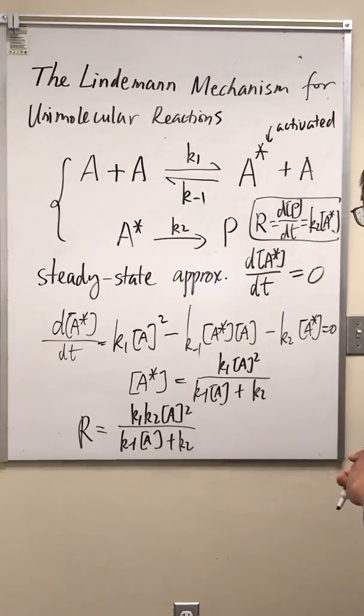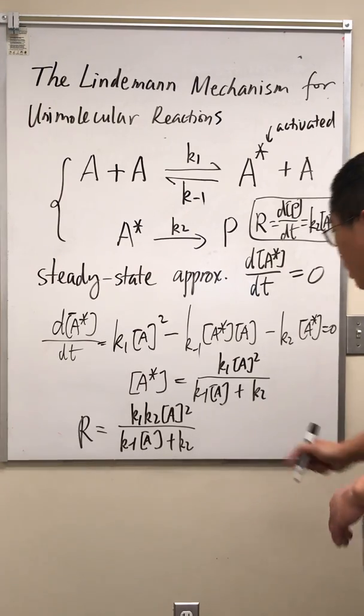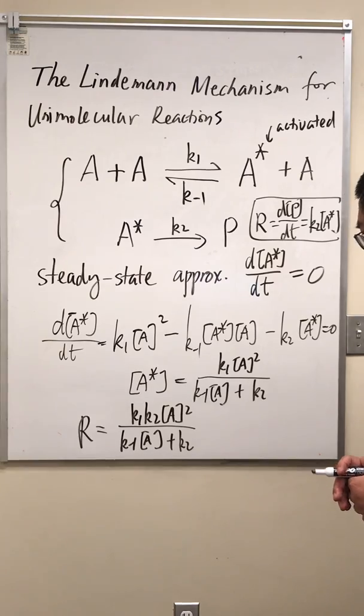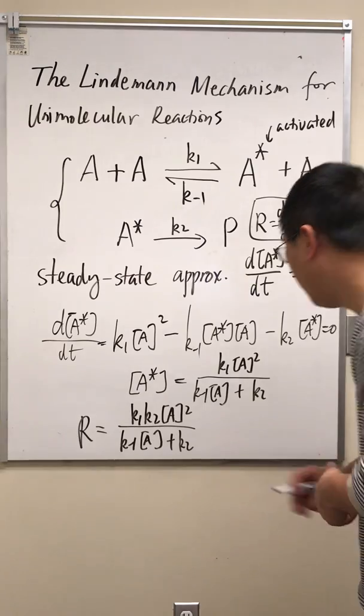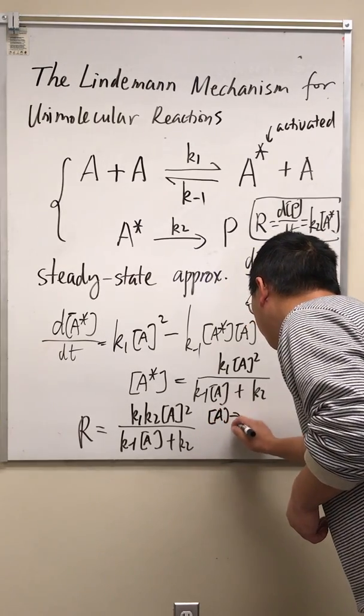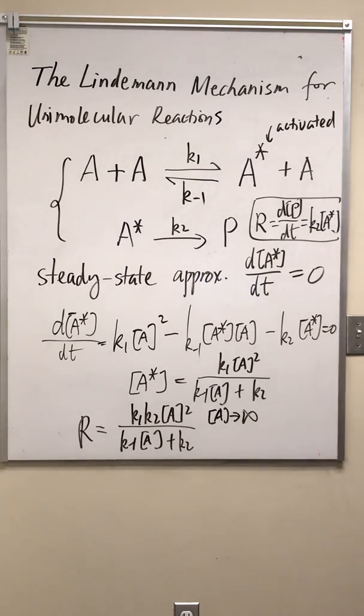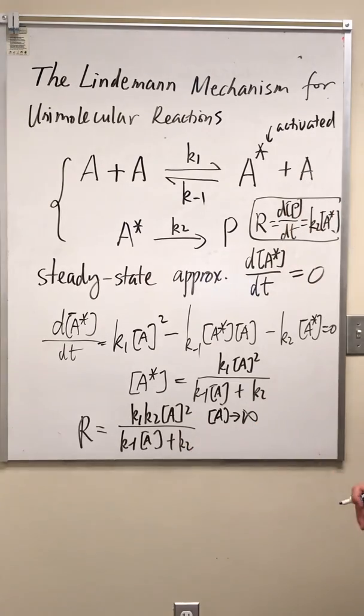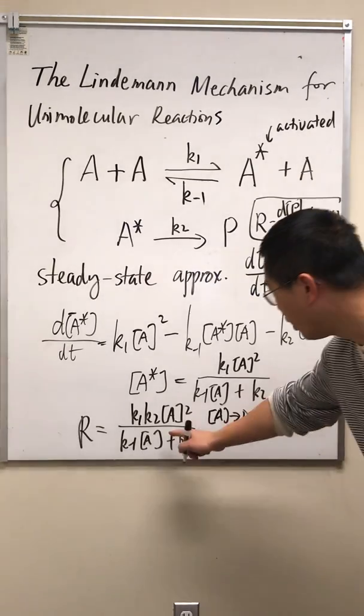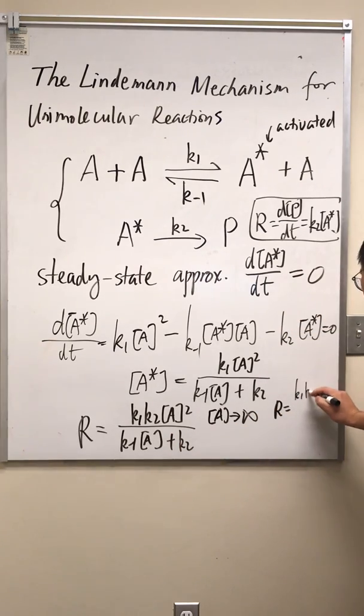In which the reactant molecules get energy via collisions. Is this a first order reaction? No. Is this a second order reaction? No. But if A is approaching infinity, A is really large, large enough that we can neglect this K2 on the bottom. And then R is, get rid of this, we have K1 K2 on top, we have K minus 1 on the bottom. We get a first order reaction. A to the power 1. First order.